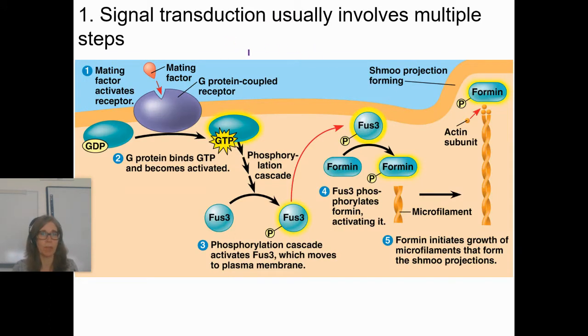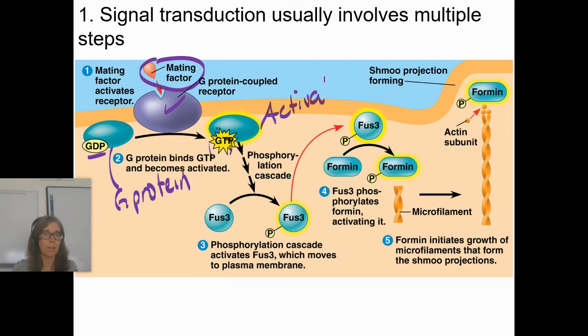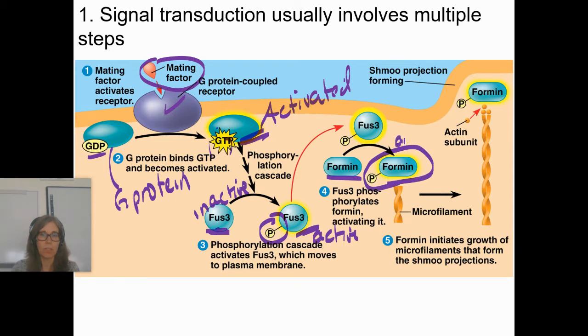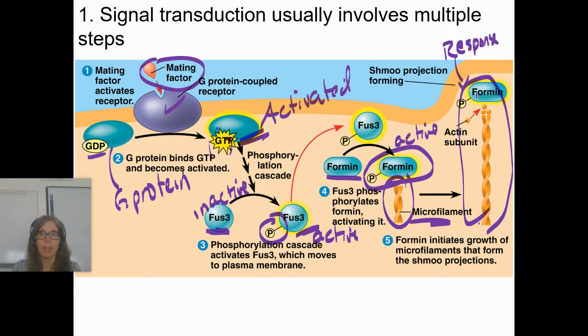Here's an example of a signal transduction pathway involving multiple steps. There's a mating factor that gets to the surface of a cell, and there's a G protein coupled receptor here. When they combine, the G protein kicks off GDP and takes up GTP. So now it's active, it's activated. Once it's activated, it activates fuse three. So here's the inactive form. And then this activated GTP, this activated G protein activates it, in this case, phosphorylating it. So now we have an active form. And that goes ahead, see it's phosphorylated, that active fuse three will go ahead and activate formin. So here's the active formin. And that's an enzyme that can add actin subunits onto a microfilament. So it grows. So it starts small, and it gets big. And so this is the final thing right here. This is the response.